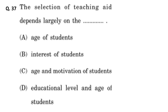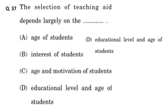The thirty-seventh question: the selection of teaching aids depends largely on what? Options: A) age of student, B) interest of student, C) age and motivation of student, D) educational level and age of student. Age appears in three options A, C, and D. The educational level is also important — if you use the same aid for Class 1 and Class 12, it won't help. Motivation has no direct relation with teaching aids. So the correct answer is D — educational level and age of the student.